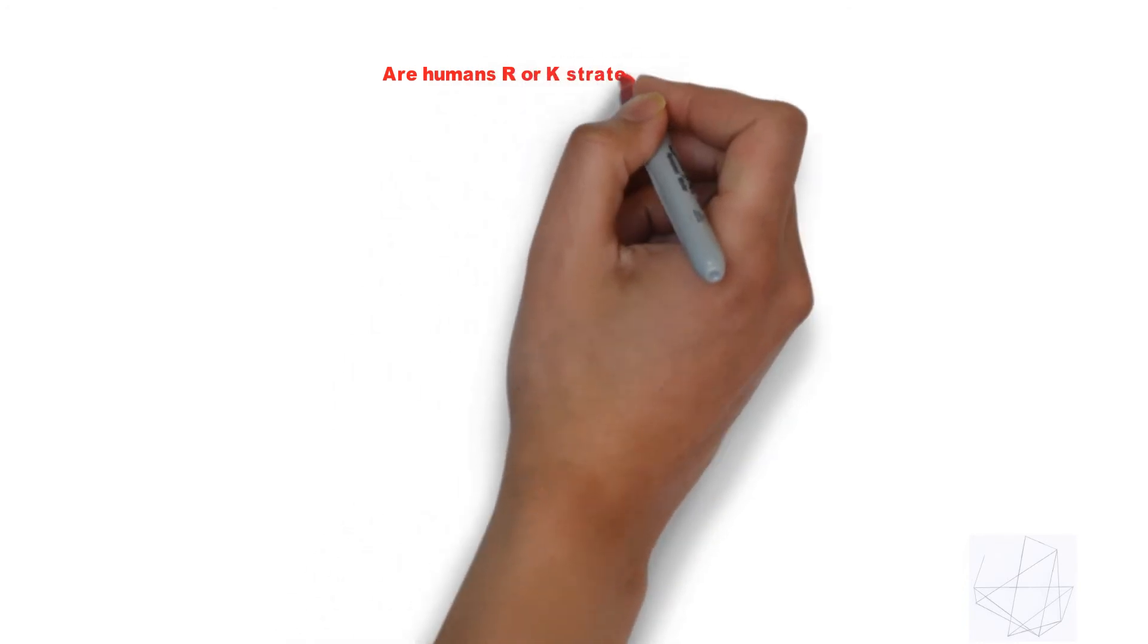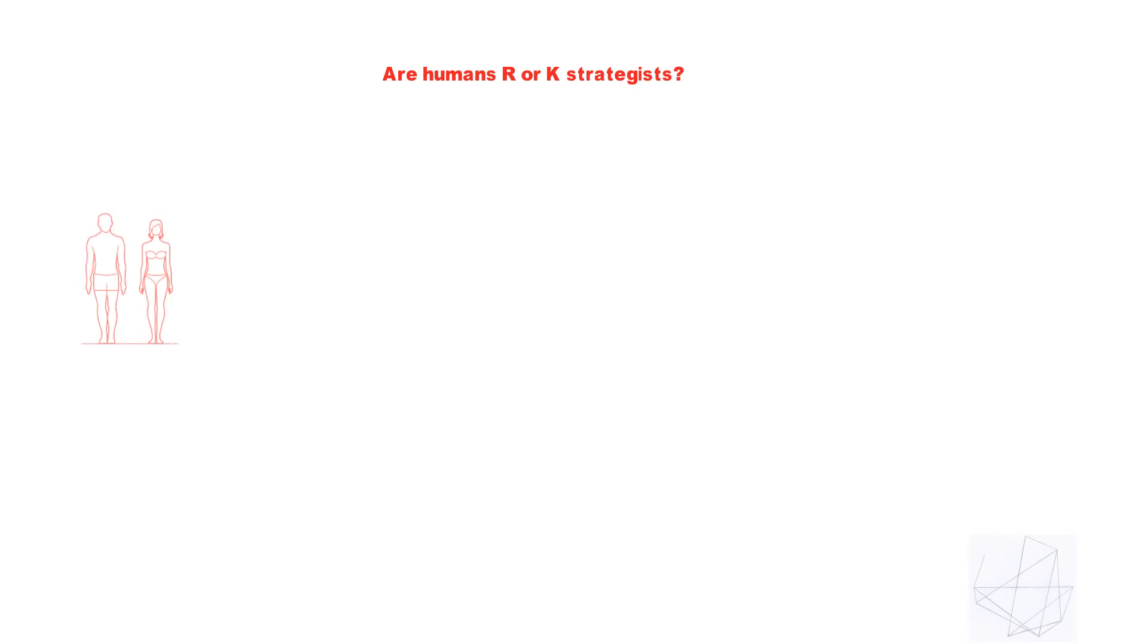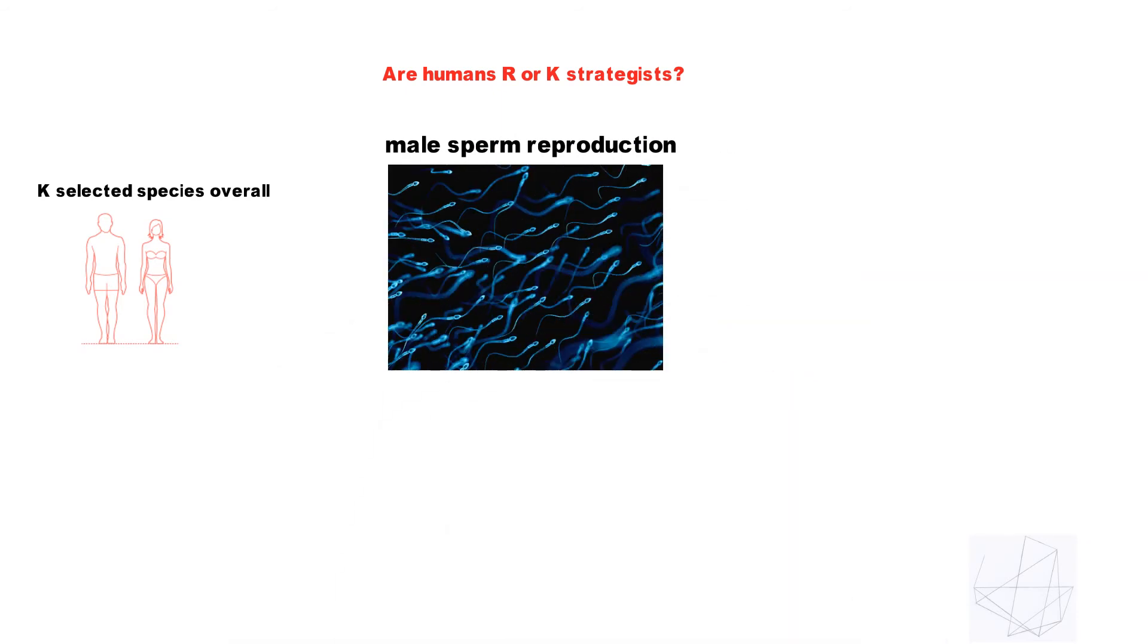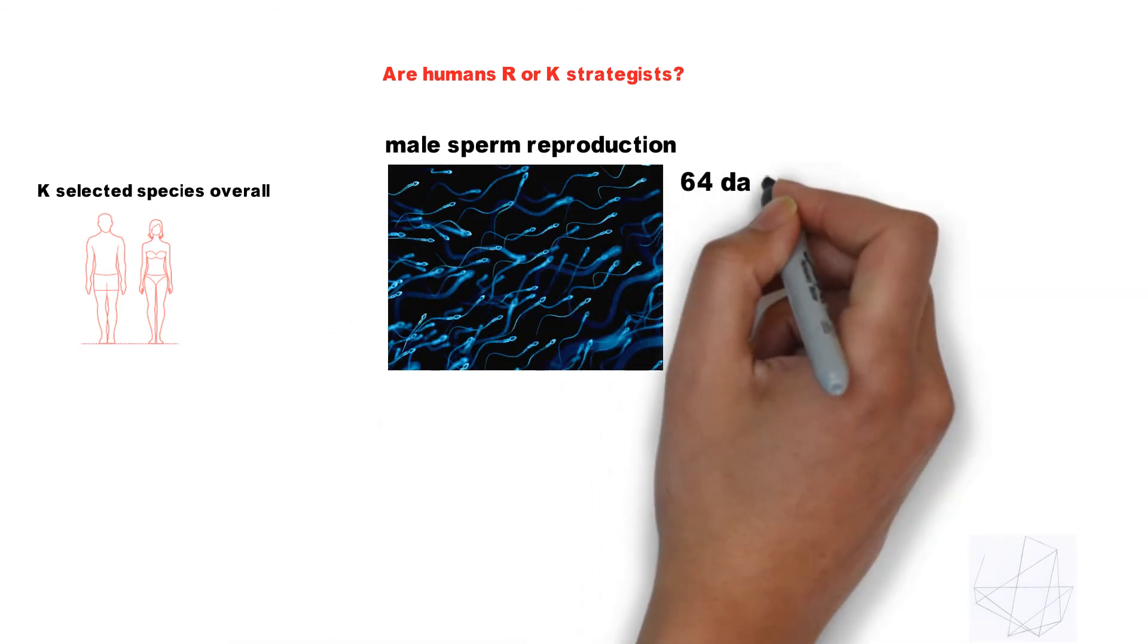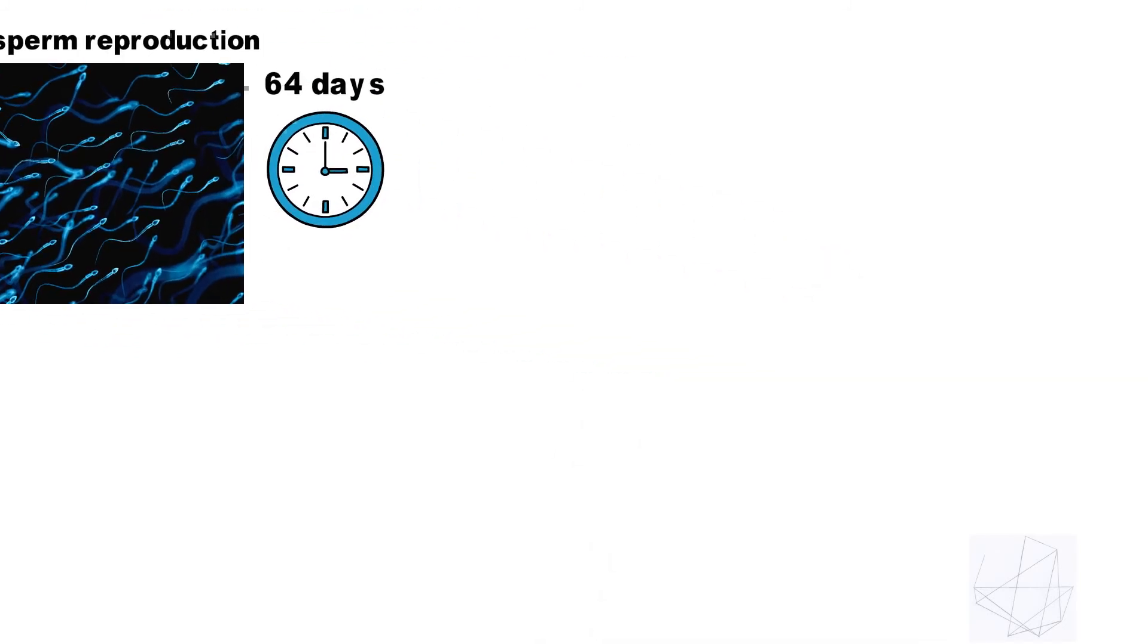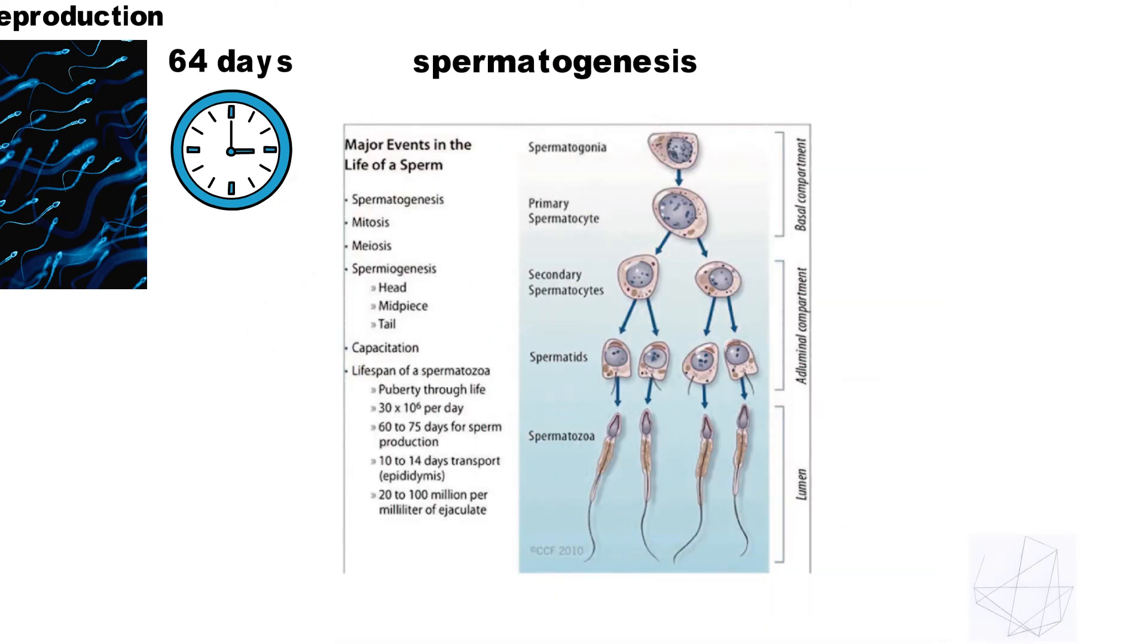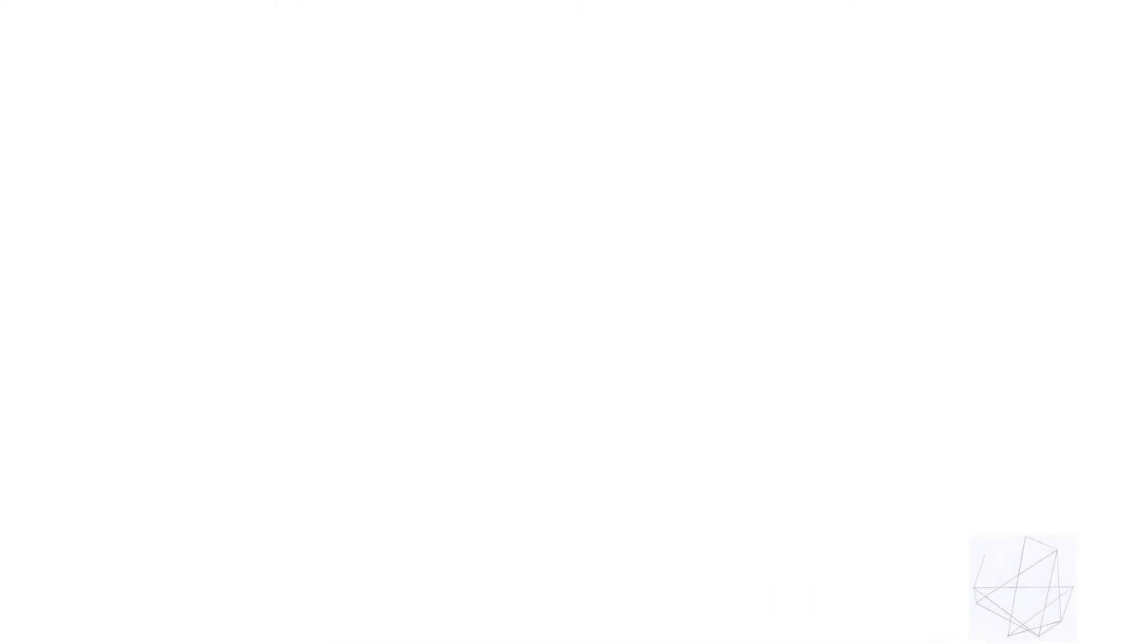The confusion comes in on a biological level where male sperm show an R reproduction strategy. On average, sperm reproduction takes 64 days for new sperm in spermatogenesis. This means on average you make 1,500 per second or 8 billion sperm, but only release 200 to 300 million in a single ejaculation.